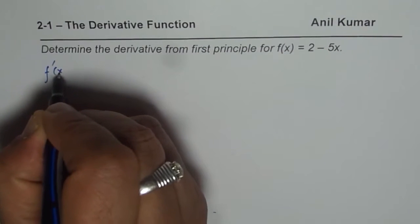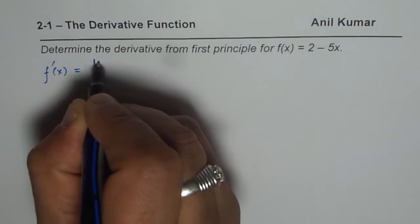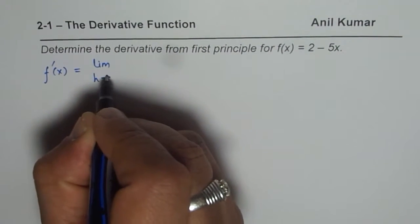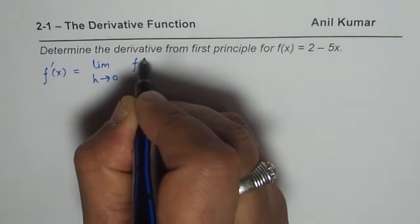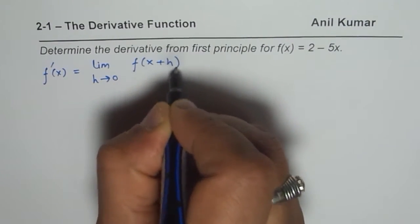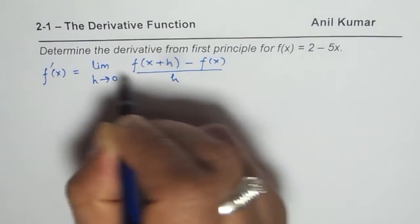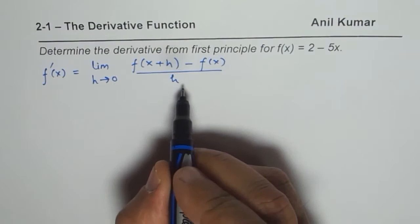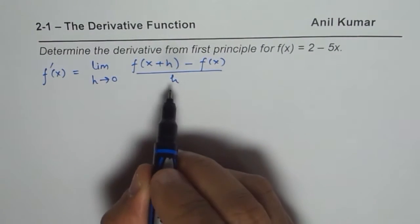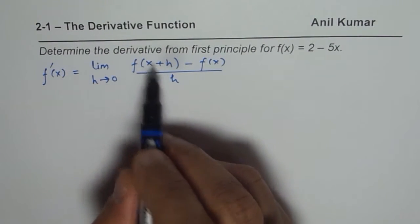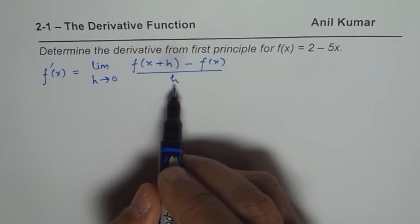the formula is f dash x equals limit h approaches 0, f of x plus h minus f of x over h. And that is the limit which we need to find. If the limit exists, then the derivative exists and we say that the function is differentiable.